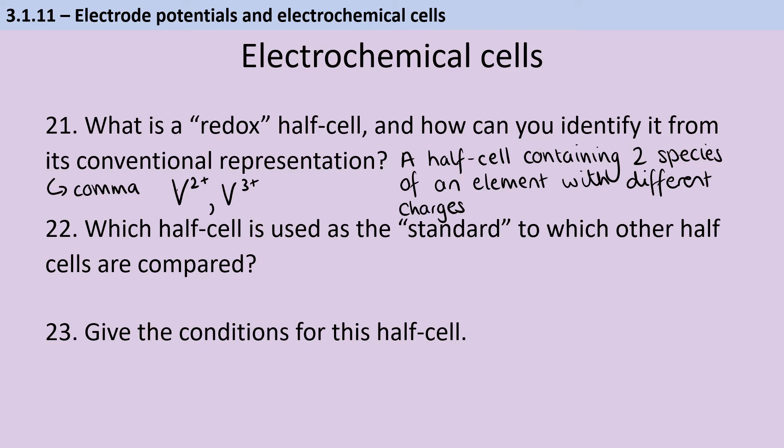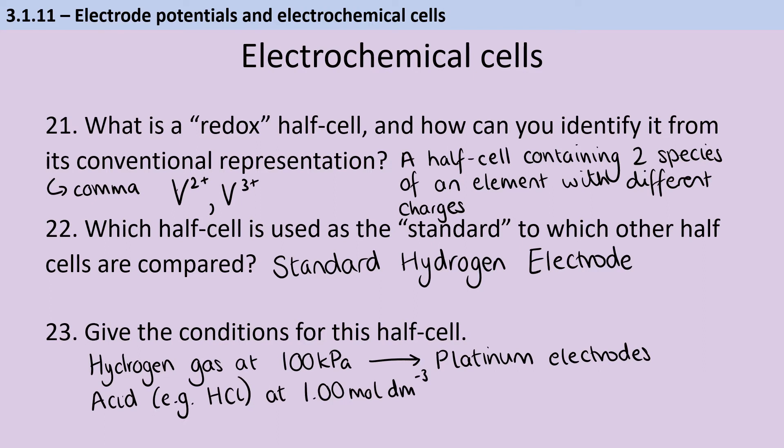The half cell that we compare everything to is our standard hydrogen electrode. And in order to be a standard hydrogen electrode, which is going to give a potential difference of zero, because that's how it's defined, it's the standard. It needs to have hydrogen gas pumped in at 100 kilopascals. And in order for that gas to interact with the hydrogen that's in the acid, we're going to need platinum electrodes in there. So don't forget them in your conventional representation. And then the acid needs to be at 1 mol per dm³, or if we're really being specific, the hydrogen ions need to be at 1 mol per dm³. So assuming you've got a monoprotic acid like hydrochloric acid, then that's also the concentration of your acid. And we also want it to be at 298 Kelvin.